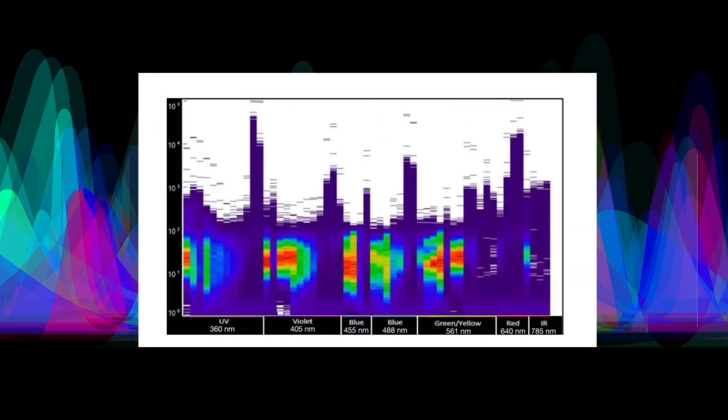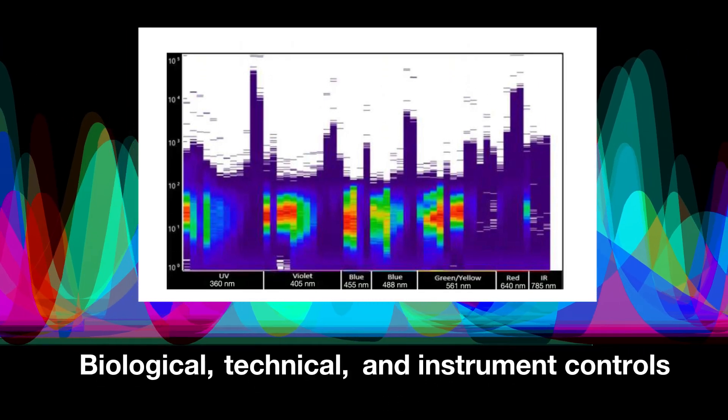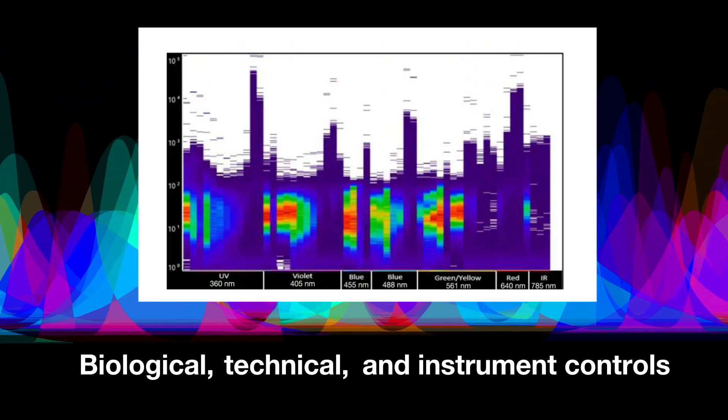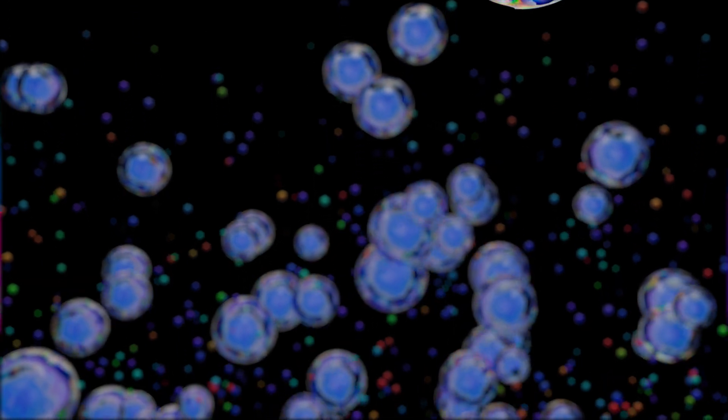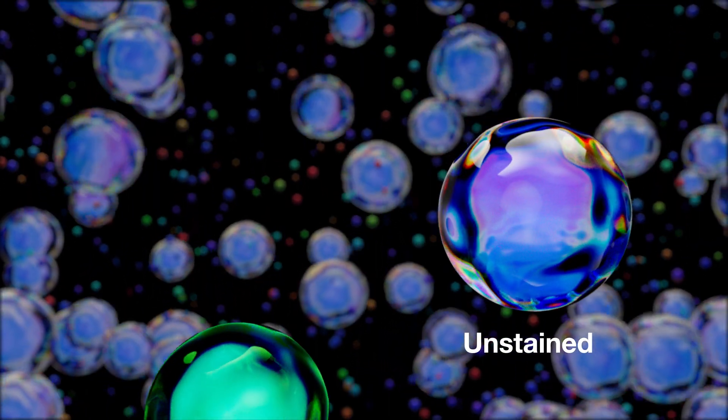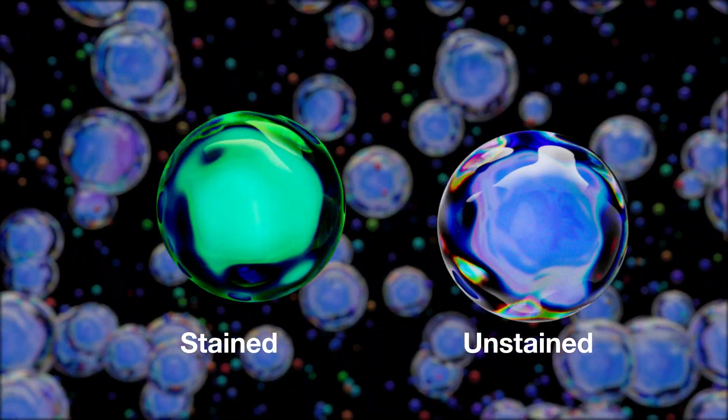Like in conventional flow cytometry, biological, technical and instrument controls are necessary to validate the success of a spectral flow cytometry experiment. Unstained samples treated identically to stained samples are used in both conventional and spectral flow cytometry to determine autofluorescence.